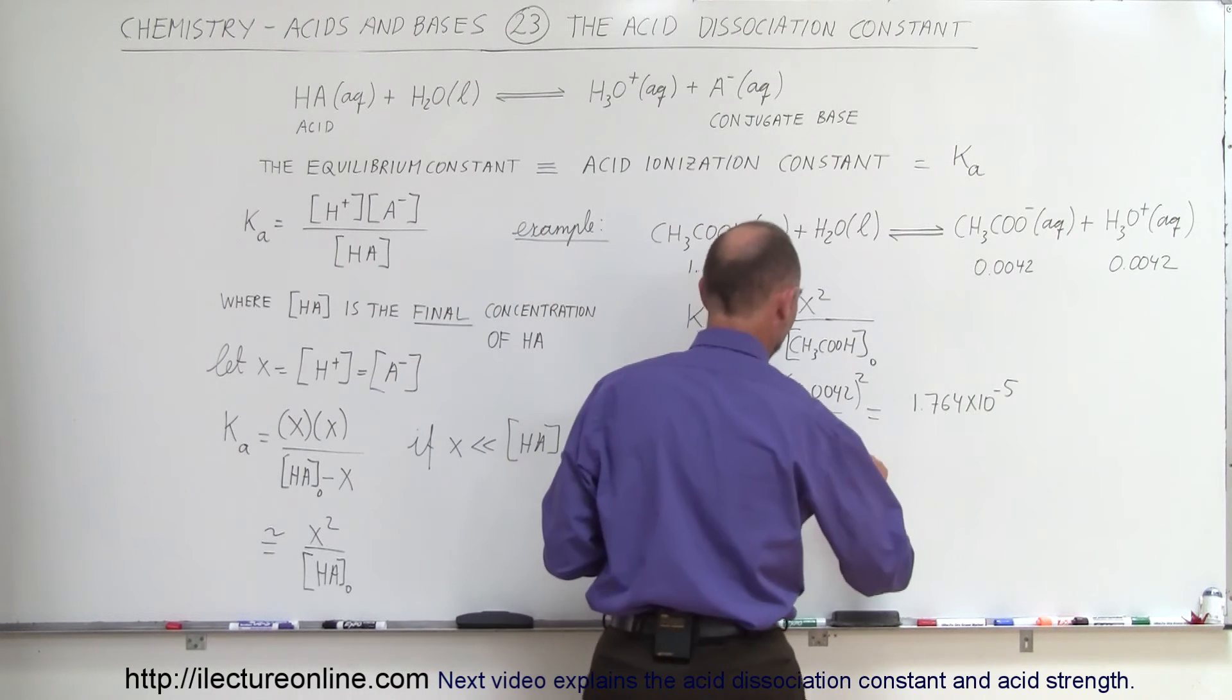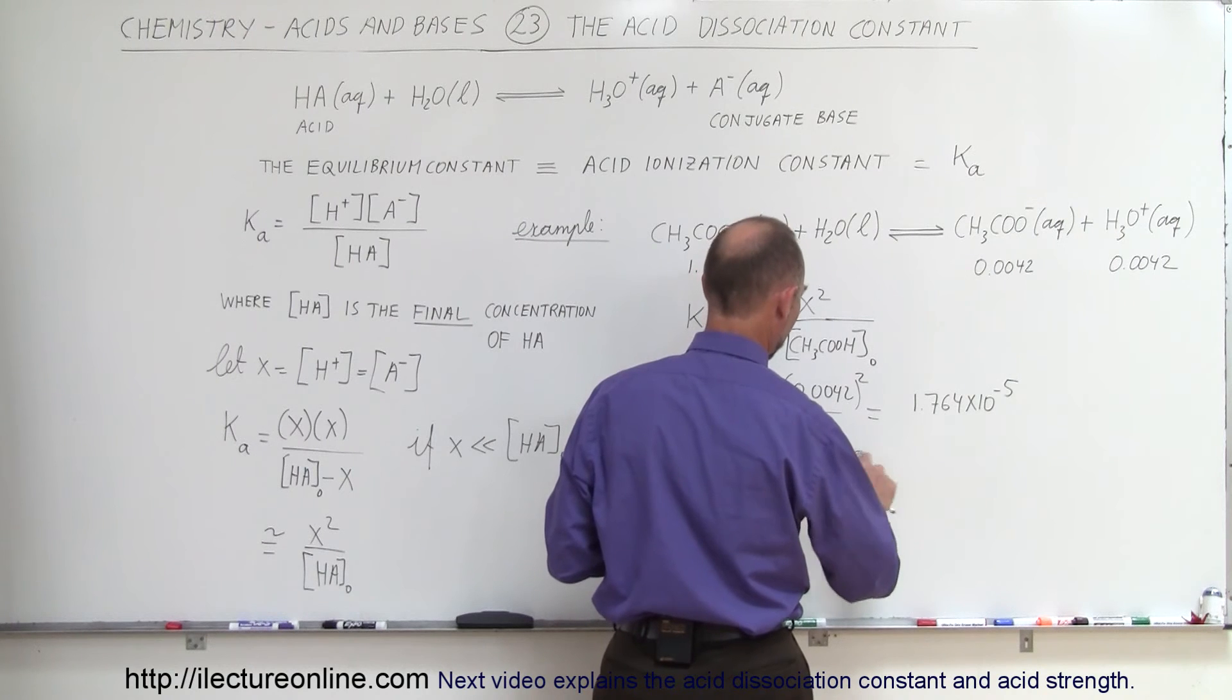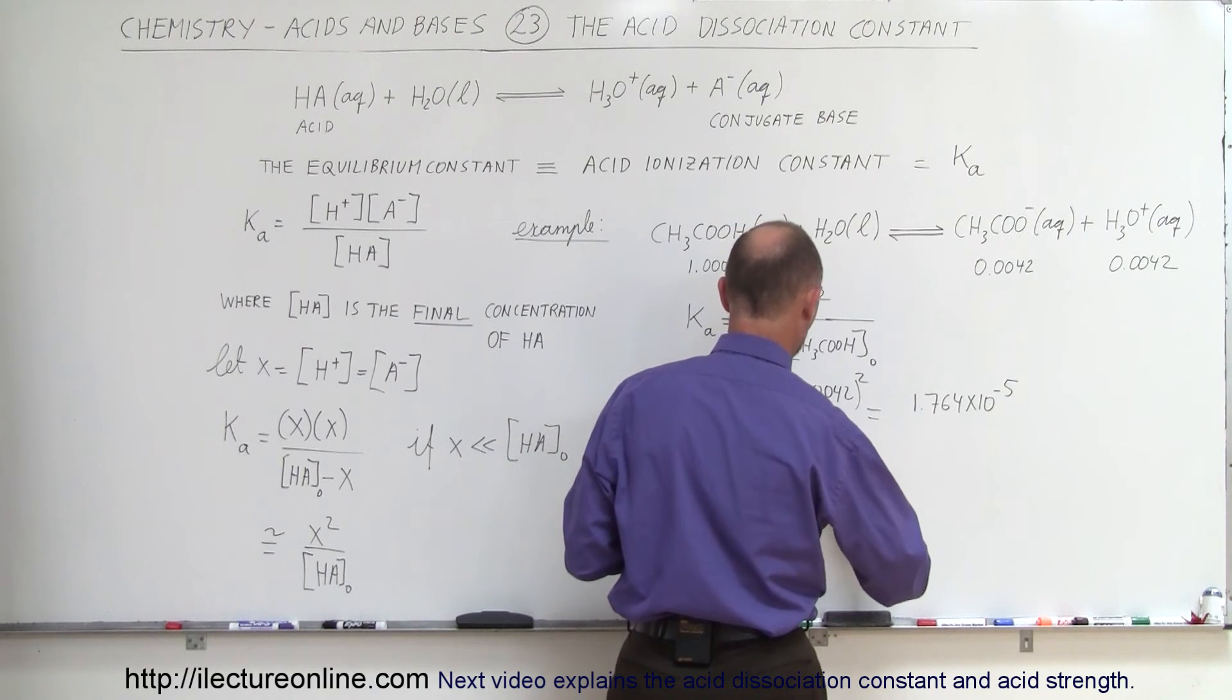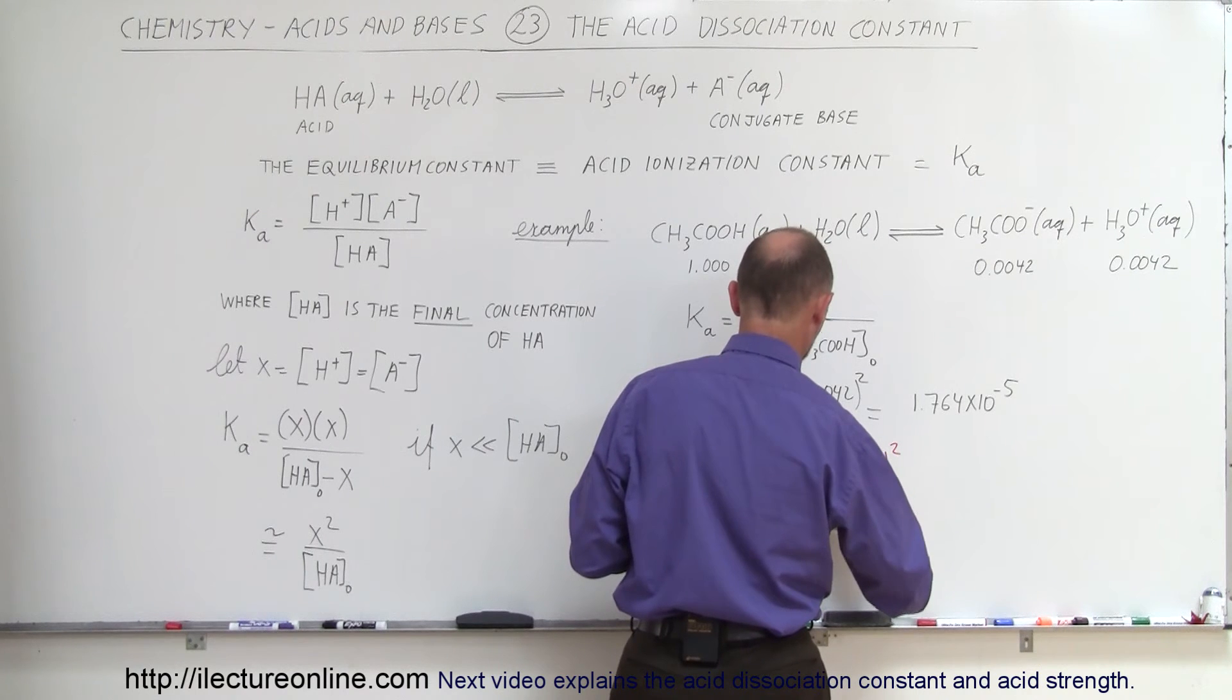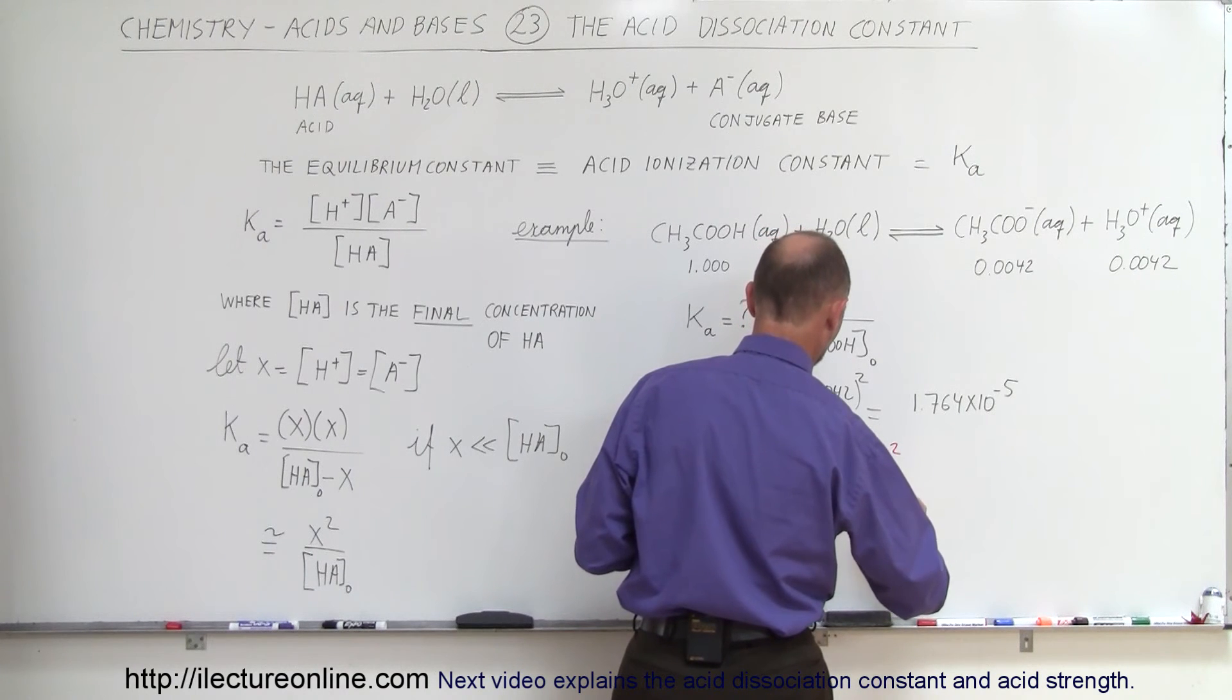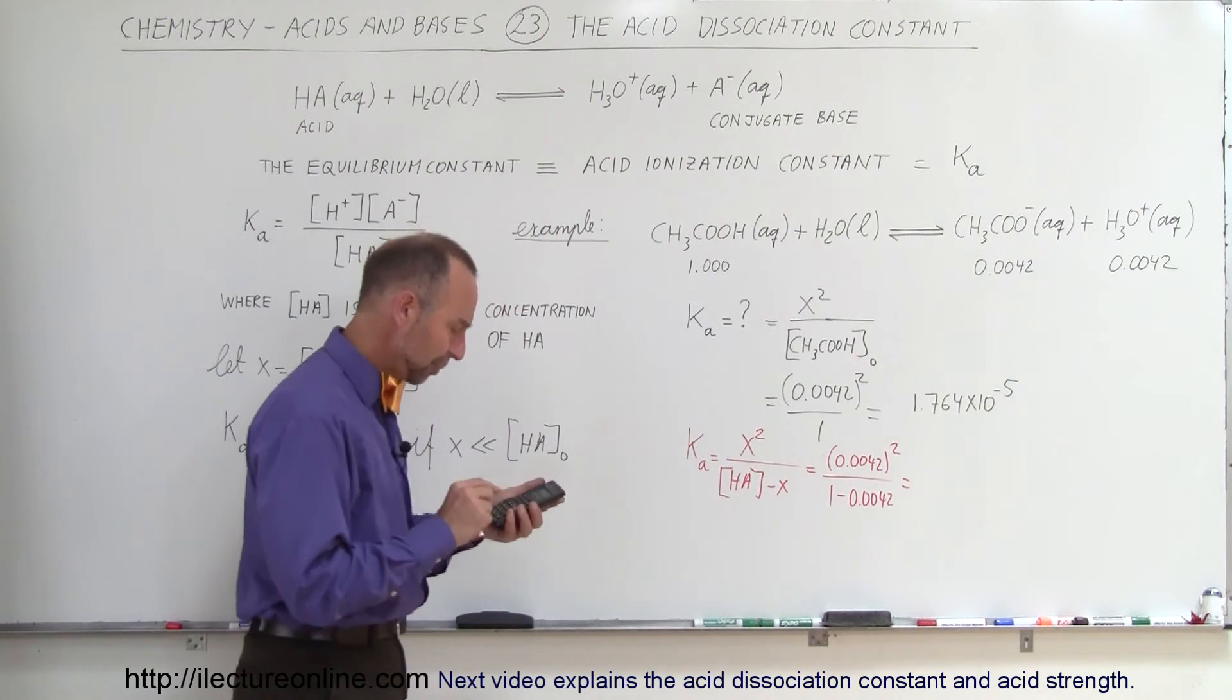So in this case, that would be equal to X squared divided by, let me put in the numbers, so that would be equal to 0.0042 quantity squared, and 1 minus 0.0042. Let's see what we would get if we didn't approximate it.